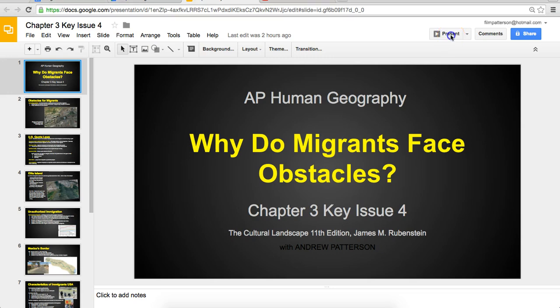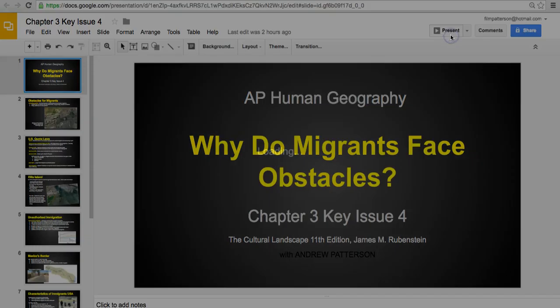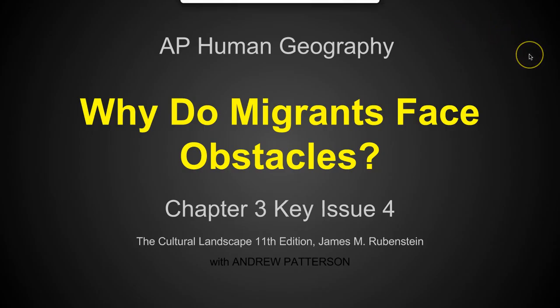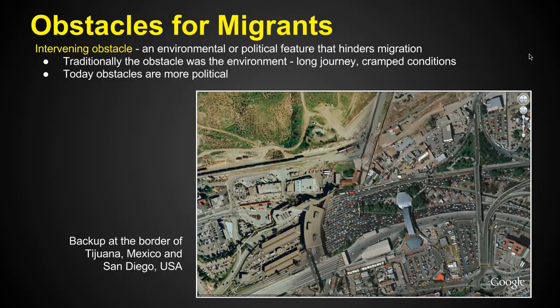Hello and welcome to Chapter 3, Key Issue 4: Why do migrants face obstacles? What keeps people from being able to move? These obstacles are called intervening obstacles — when you have an environmental or political feature that hinders migration, something that stops you from being able to move.